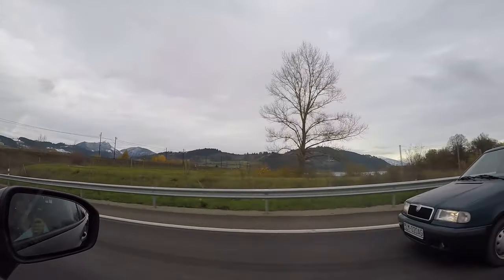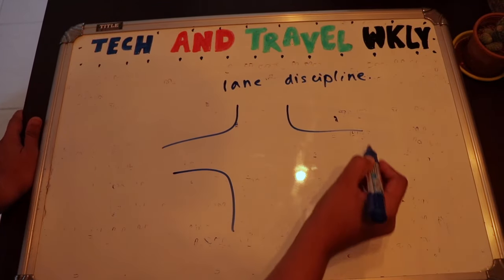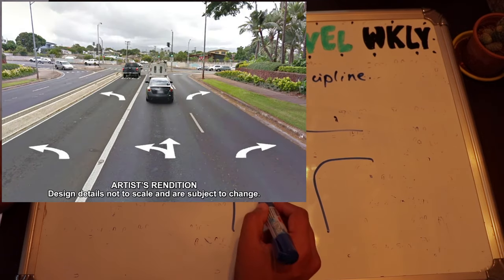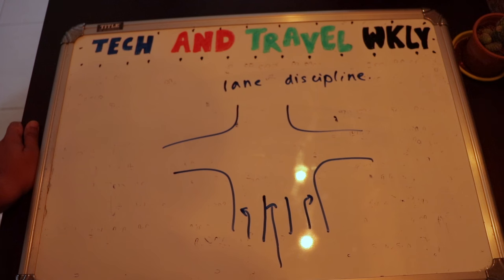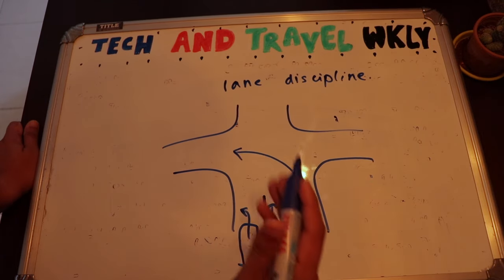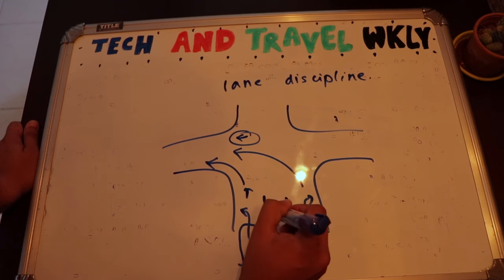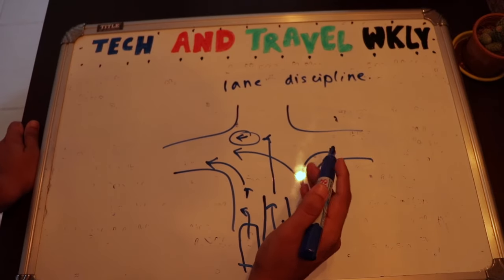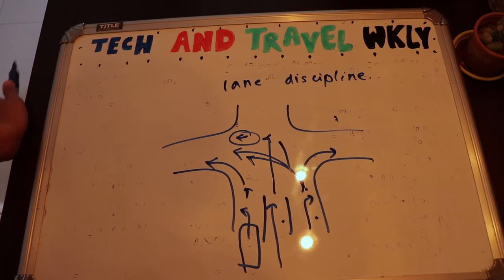At an intersection, lane discipline also matters. There will be markings on the road indicating which lane goes left, straight, or right. If you want to turn left, you must be in the left lane before you approach the junction — you cannot be in the straight lane and then turn left. Follow the road markings, and after your green light starts, only then make your turn. Failing to do this causes traffic problems.